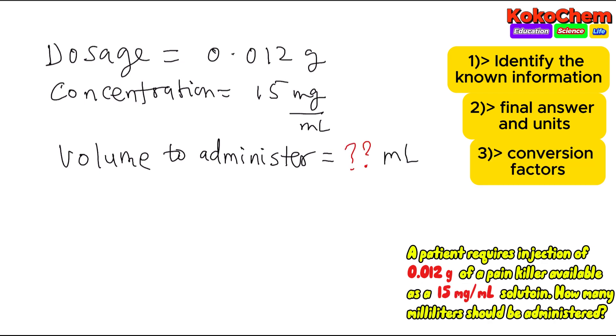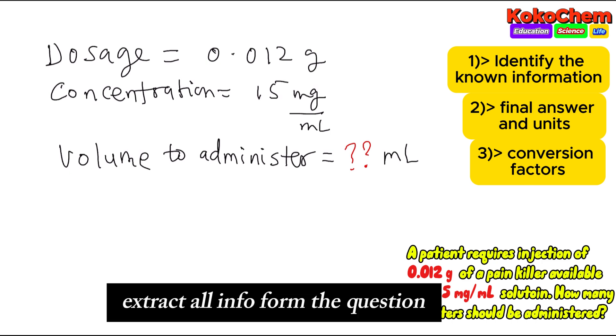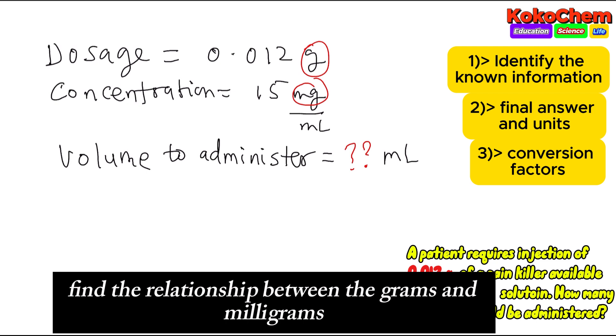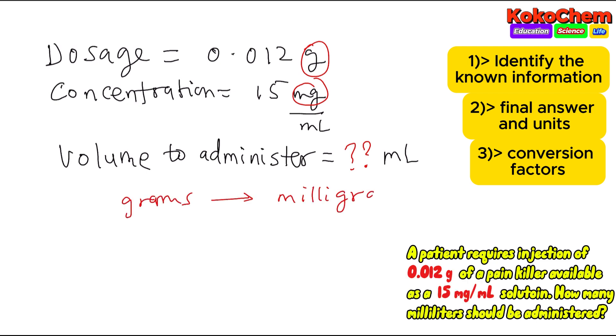Step three: identify conversion factors. You know grams and you know milligrams, so you're finding the relationship between grams and milligrams.